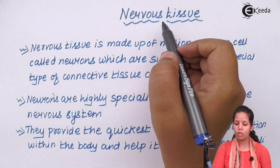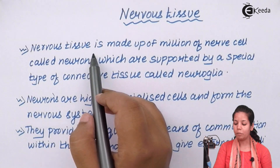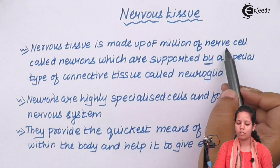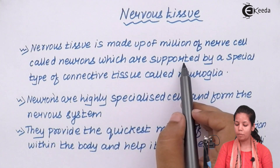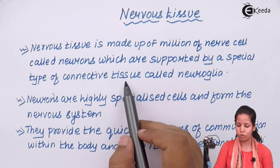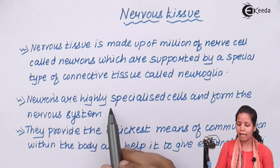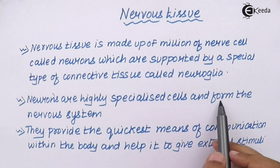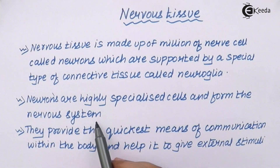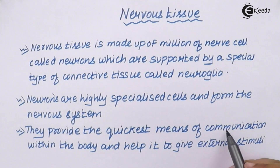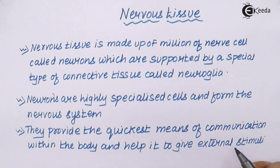Nervous tissue is basically made up of millions of nerve cells, or simply neurons, and these neurons are supported by a special type of connective tissue called neuroglia. Neurons are highly specialized cells that form the nervous system. They provide the quickest means of communication within the body and help us respond to external stimuli.